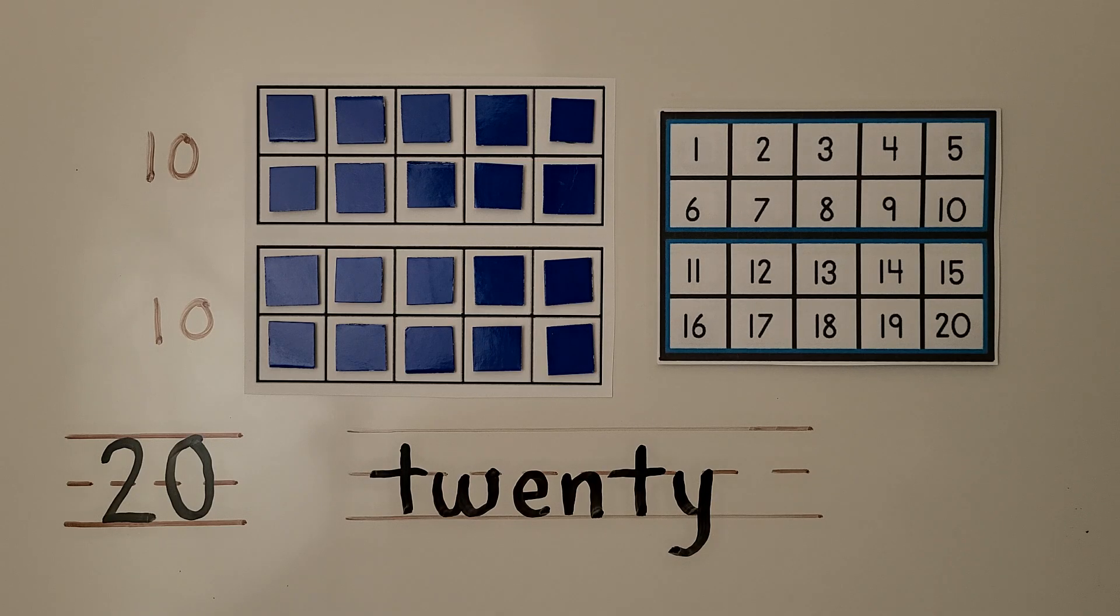We can model 20 with two full ten frames. This is the number 20. It's a 2 with a 0 next to it. This is the word twenty: T-W-E-N-T-Y.